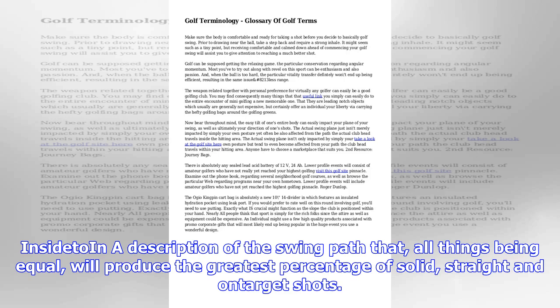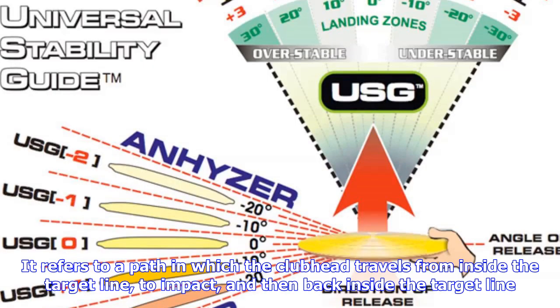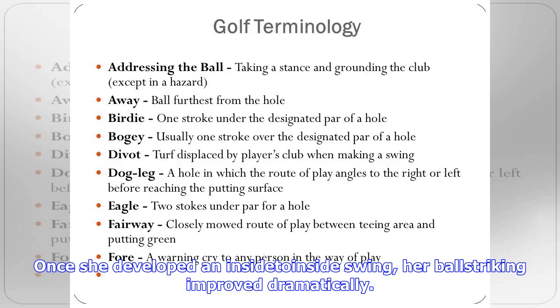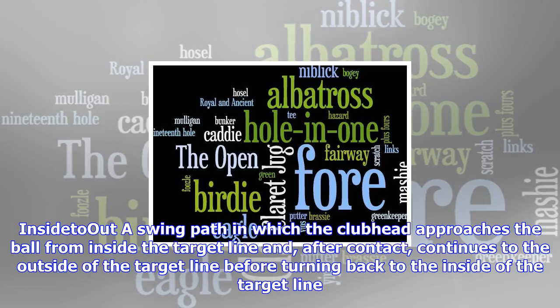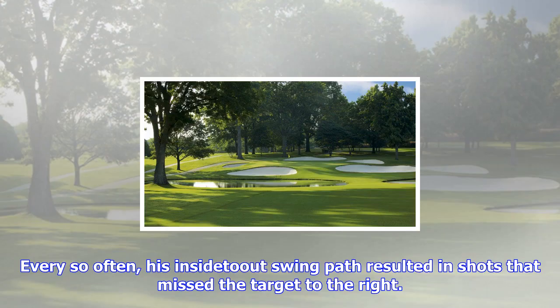In addition, the PGA of America's Grand Slam of Golf is a late-season event that features the winners of that year's four professional major championships. Golf range: a facility where people can practice their full swings and, in some cases, their short games. In Japan, golf ranges are very popular because the number of golf courses is limited.